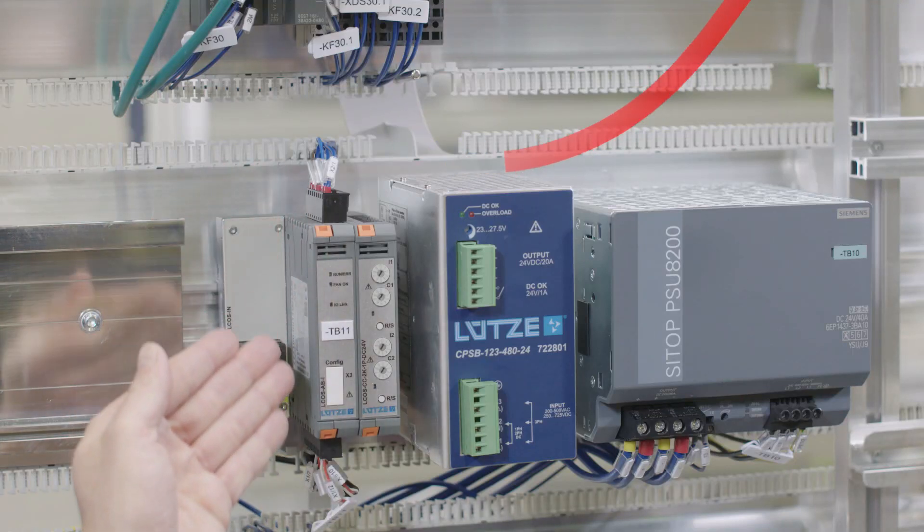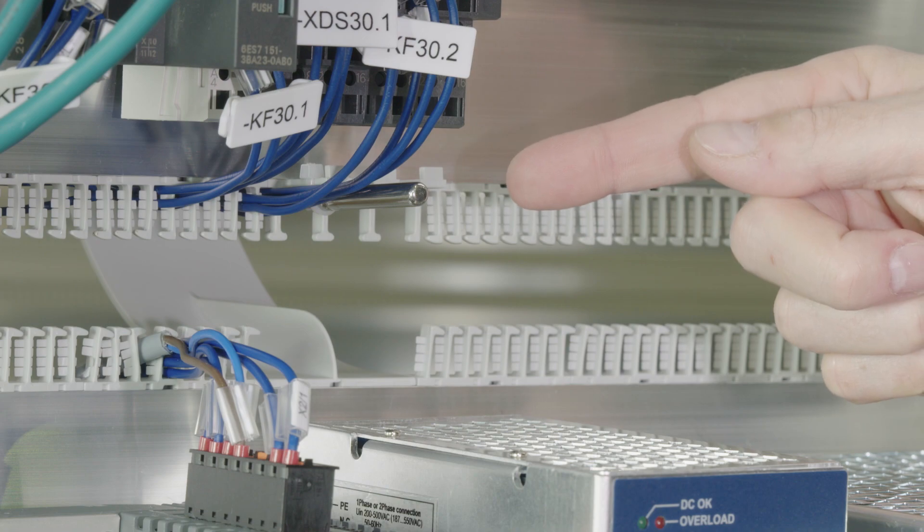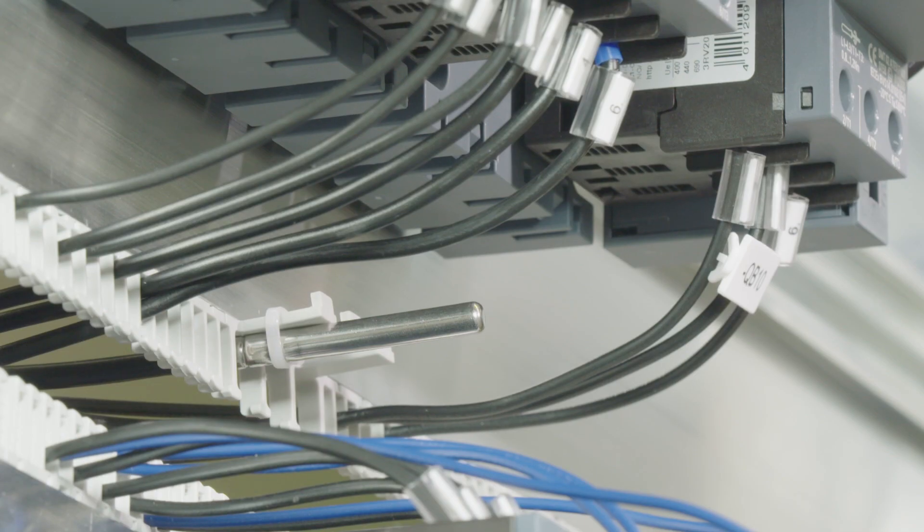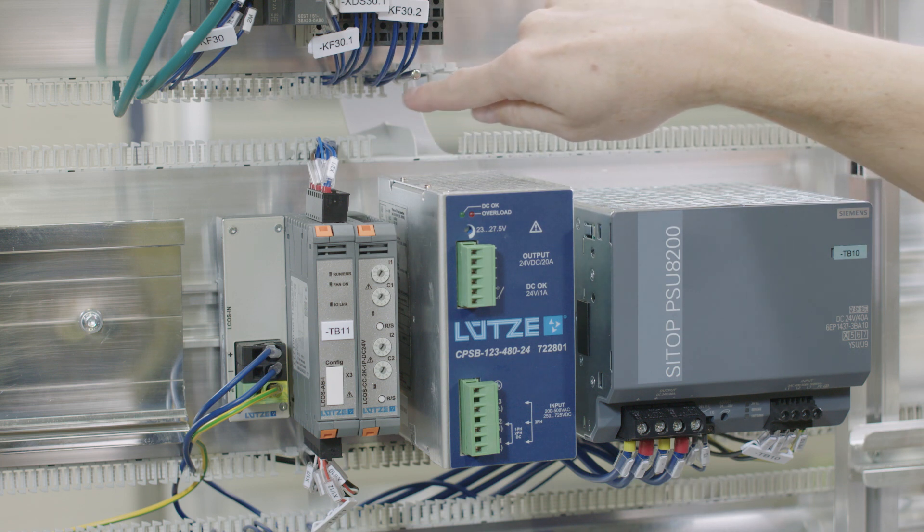The control unit also includes three PT100 sensors, which switch the air blower on or off when the interior of the cabinet is above the required temperature. The temperature sensors are placed underneath sensitive components where hotspots could arise.